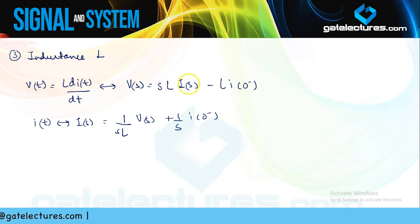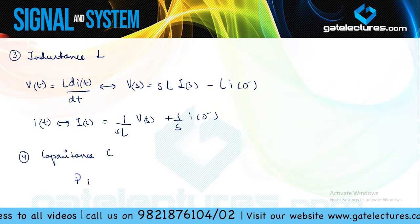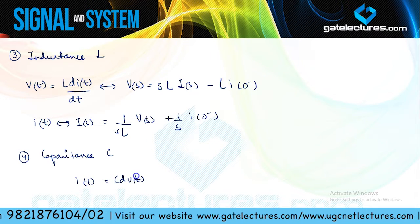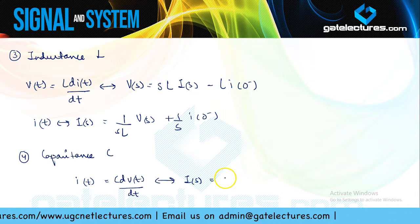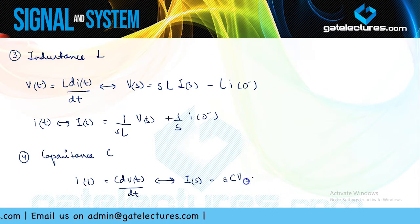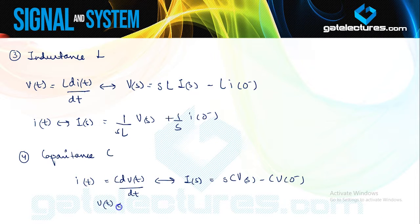Just rearranging the terms in this equation. Now we look at the last element, which is the capacitance. The current across the capacitance is given by C·dV(t)/dt. If you just transform this into the S domain, I(s) = S·C·V(s) − C·V(0⁻). This term takes care of any stored voltage, any stored charges by this capacitance. In the model, if I try to represent voltage, then this is going to be the equation.